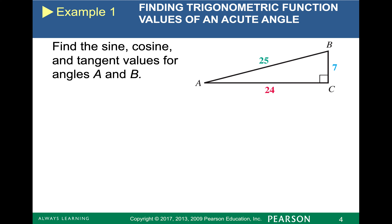Now I want to find the sine, cosine, and tangent values for angles A and B. An angle is like our compass — it tells us where we are located in the triangle. So the very first thing you should do with any trig problem is figure out where you are. If I want to do angle A first, put your finger on angle A. If you're touching angle A, ask yourself what leg is opposite of angle A — for this one, that would be seven. Then ask yourself what is the hypotenuse of the triangle. The hypotenuse is always across from the right angle, so my hypotenuse is 25, and my adjacent is 24.